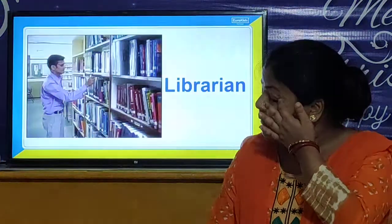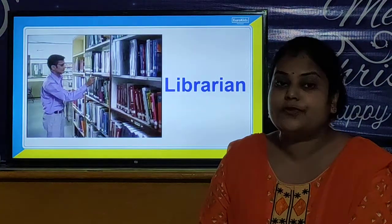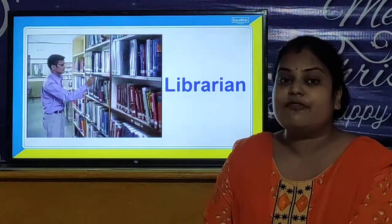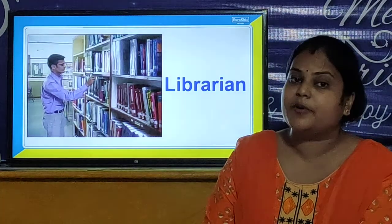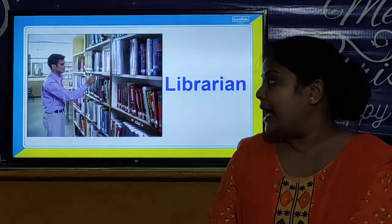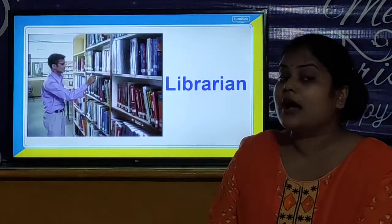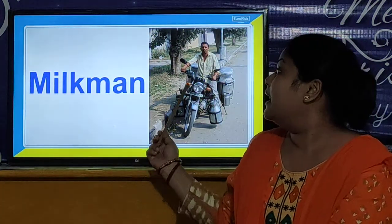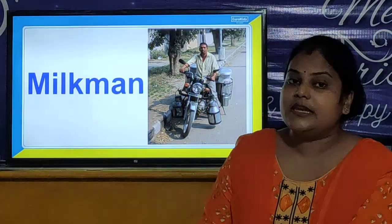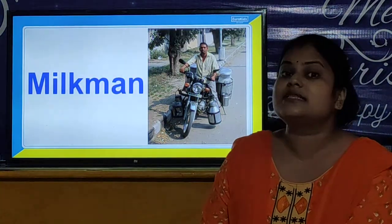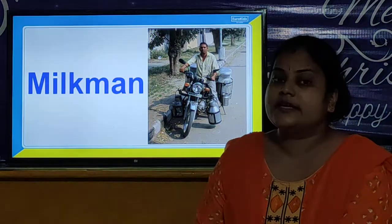Our next community helper is the librarian. What does the librarian do for us? The librarian helps us to find a book. When we need a book of a particular subject, the librarian helps us to find that particular book. So the librarian is also a community helper. Our next community helper is the milkman. The milkman delivers us milk, and by delivering milk, he helps us. He is a community helper.